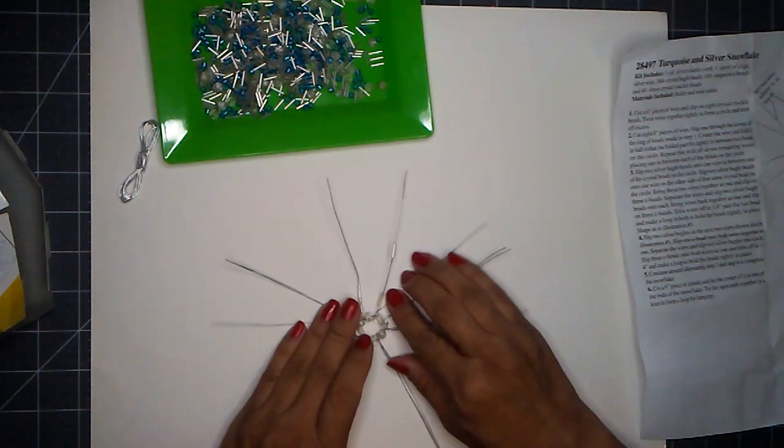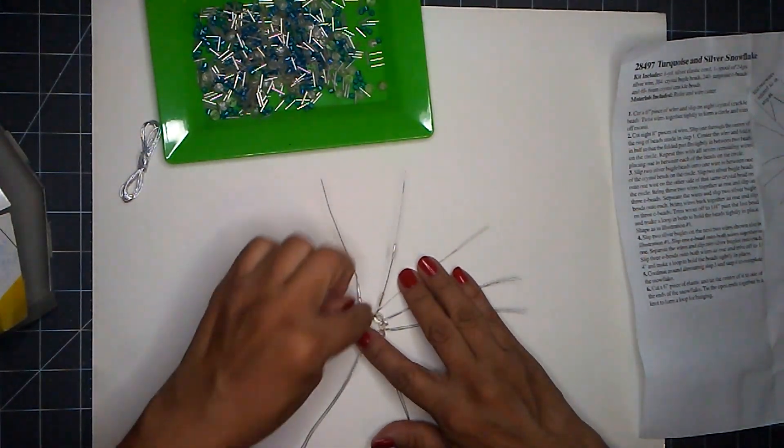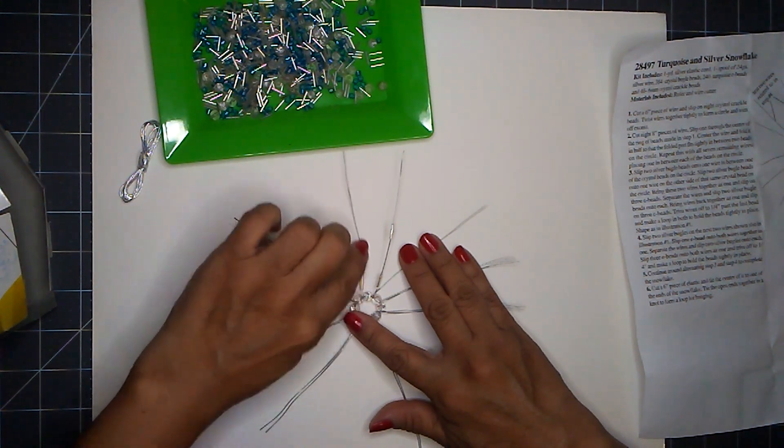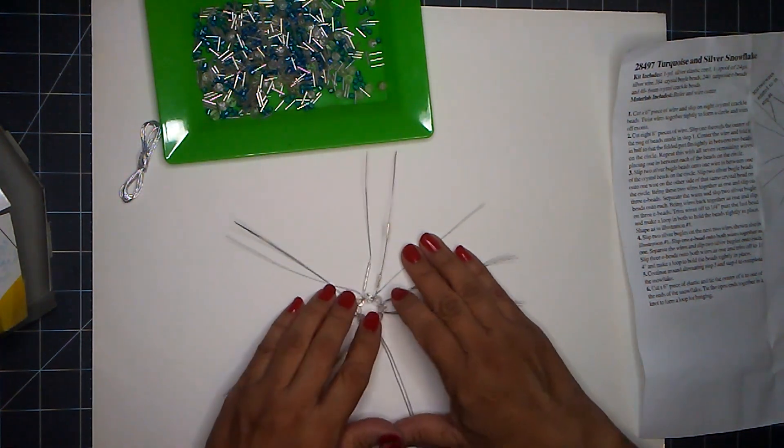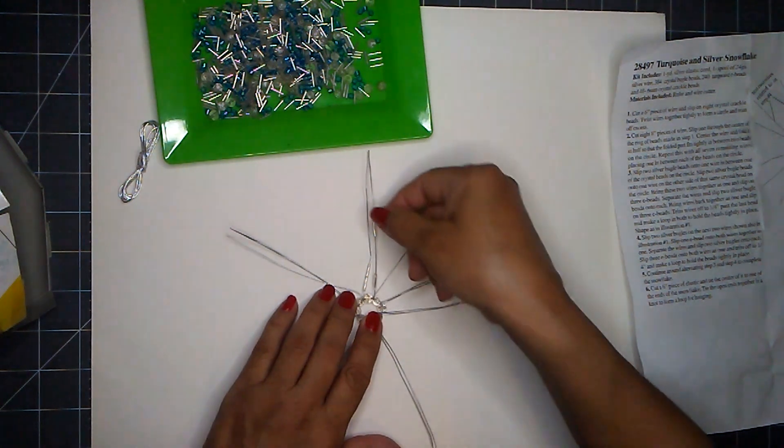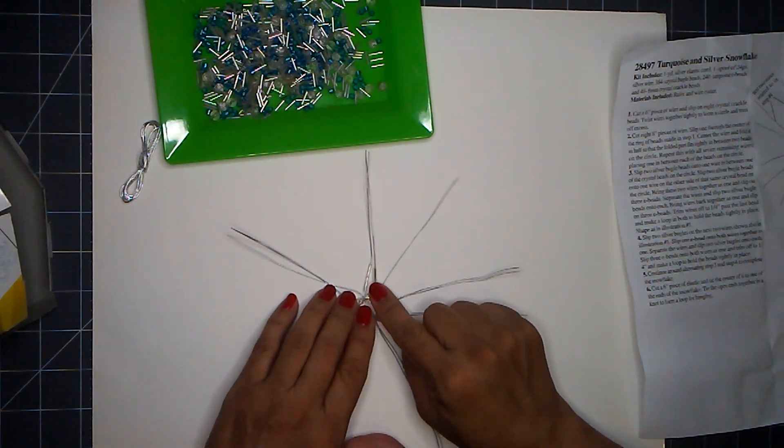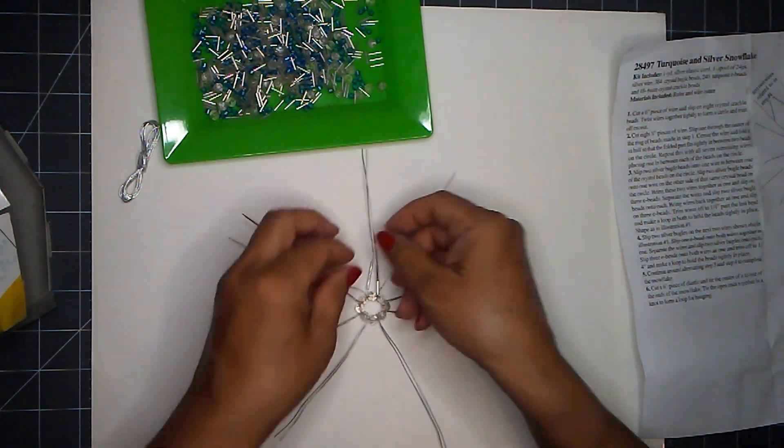This here and then take two bugle beads on here. So this is what it looks like. See, you got the round bead, you got a wire on the side, put two bugles there, and then on the other side of the bead, get another wire. And then you slip two bugle beads on that one. Now you bring the two wires together.